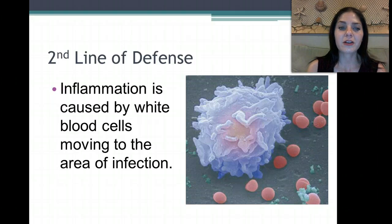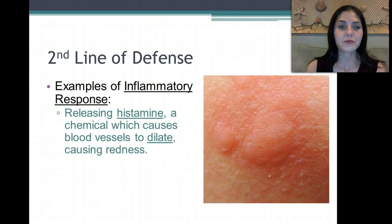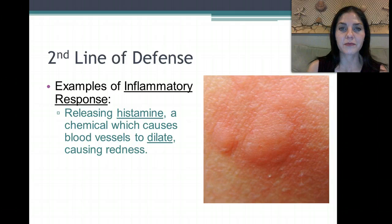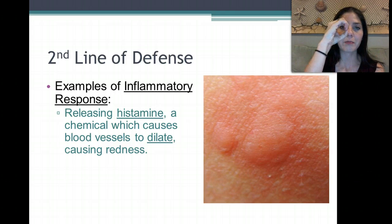Inflammation is caused by white blood cells moving to the area of the infection. Right here is a white blood cell that's going to be moving to the area of the infection. When something enters our body, we release histamine — a chemical which causes blood vessels to dilate, causing redness. Dilate means to get bigger and bigger and bigger.